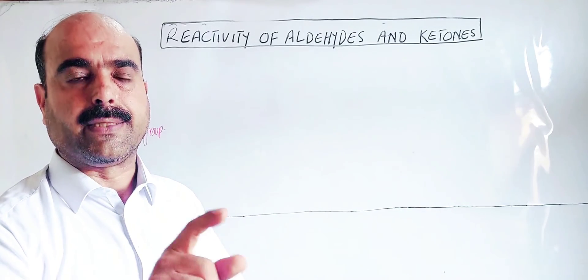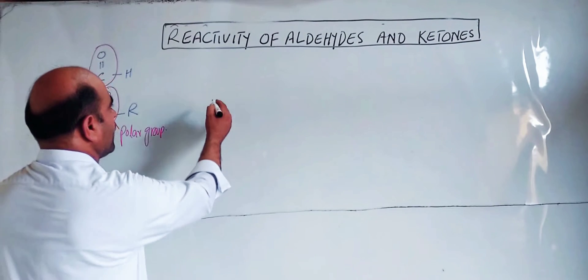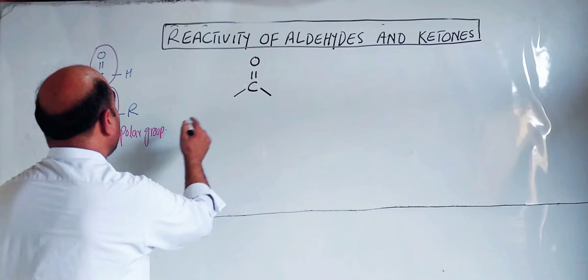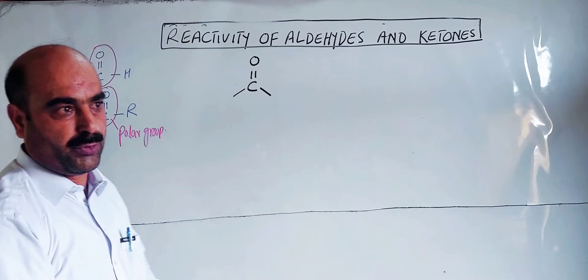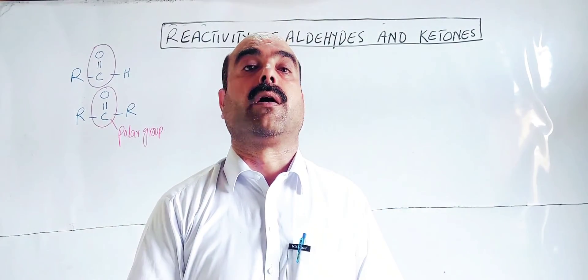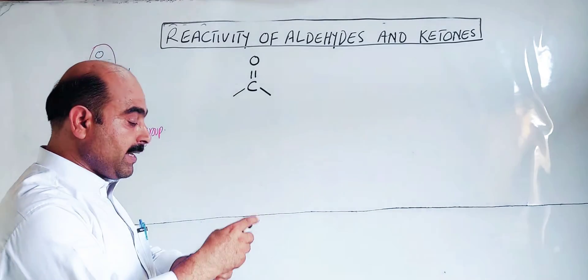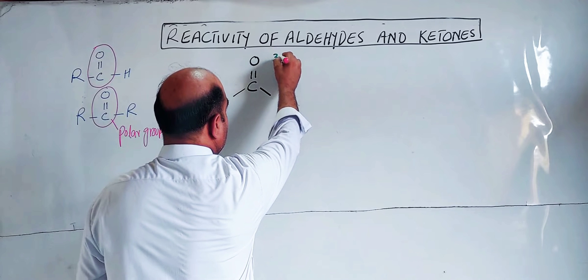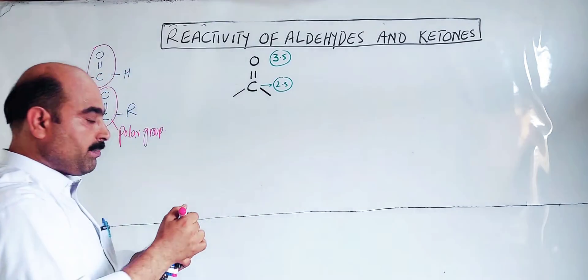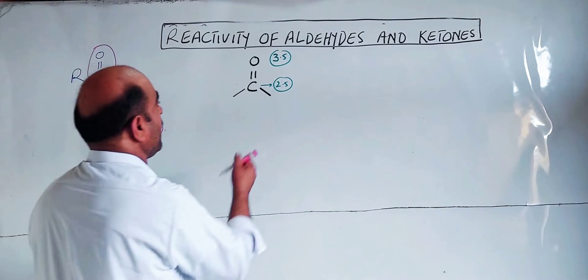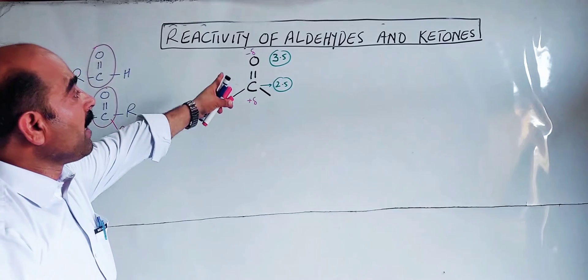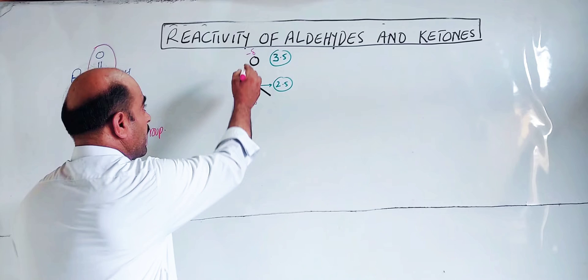We will discuss the structure of the carbonyl group in the next video. The carbonyl group is the main source of reactivity. The functional group is the reactive part of organic compounds. In the carbonyl group, oxygen has an electronegativity of 3.5 and carbon has an electronegativity of 2.5, so oxygen is more electronegative than carbon. Oxygen pulls the shared pair of electrons more towards itself, getting a partial negative charge, while carbon gets a partial positive charge.